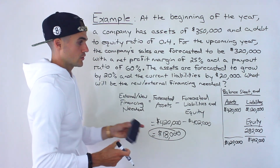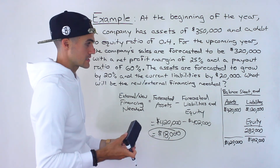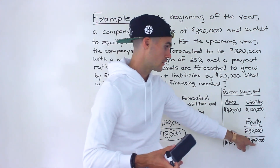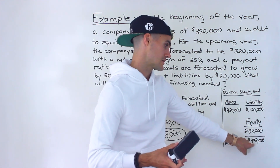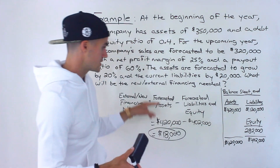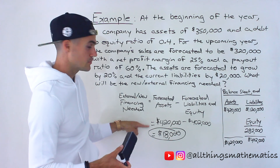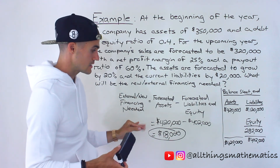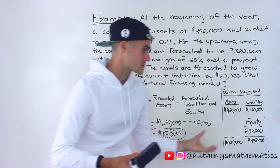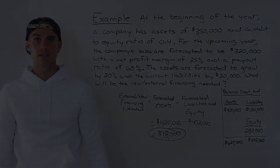Sometimes this answer could be negative, meaning there's excess financing — excess cash in the company — if the right side ends up greater than the left side. Always keep the order as forecasted assets minus forecasted liabilities and equity. In this case it's a positive $18,000, meaning $18,000 of external or new financing is needed.